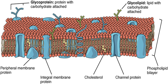Probably the most important feature of a biomembrane is that it is a selectively permeable structure. This means that the size, charge, and other chemical properties of the atoms and molecules attempting to cross it will determine whether they succeed in doing so. Selective permeability is essential for effective separation of a cell or organelle from its surroundings. Small hydrophobic molecules can readily cross phospholipid bilayers by simple diffusion; particles required for cellular function but unable to diffuse freely enter through a membrane transport protein or are taken in by endocytosis.